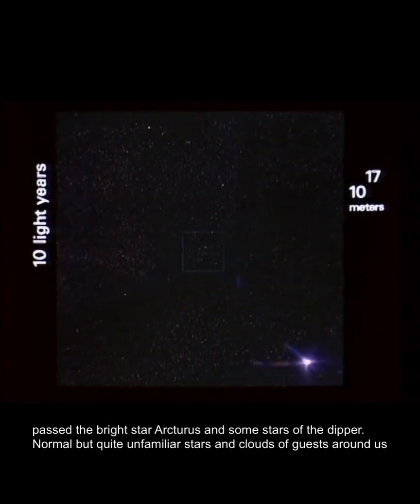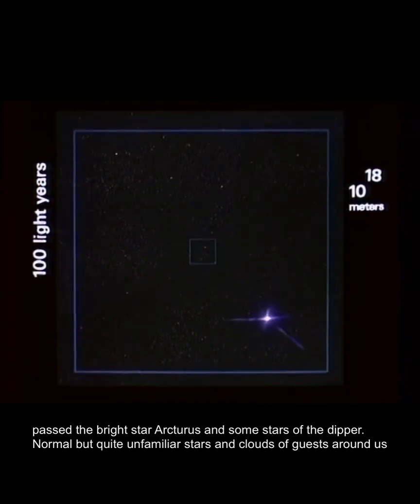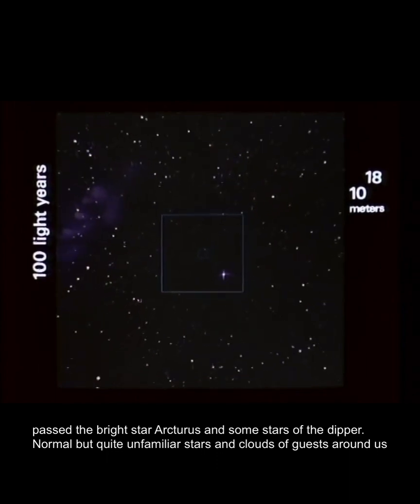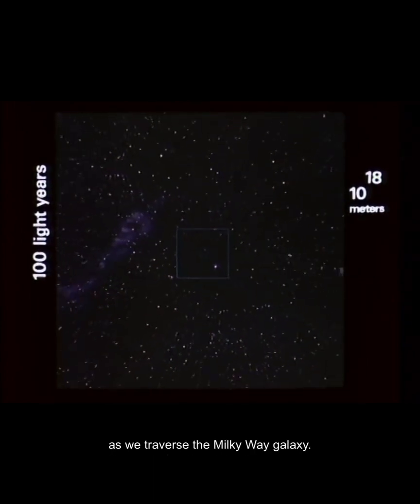At last we pass the bright star Arcturus and some stars of the Dipper. Normal but quite unfamiliar stars and clouds of gas surround us as we traverse the Milky Way galaxy.